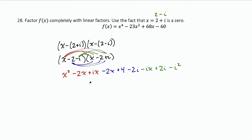Now we can simplify. We've got plus ix minus ix, so those cancel. Negative 2i and plus 2i, those cancel. And then we can combine some like terms. We've got minus 2x and minus 2x, that's minus 4x. And then plus 4, and this minus i squared, i squared is negative 1, so minus i squared is plus 1. So we have plus 4 plus 1, which is plus 5.